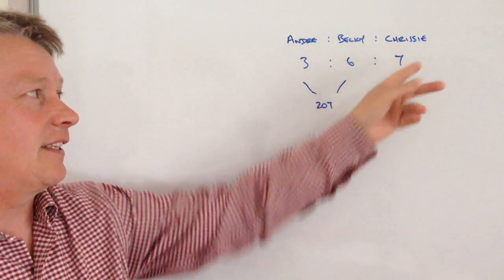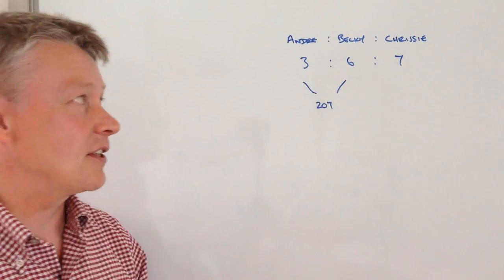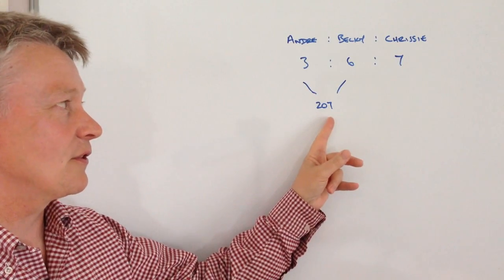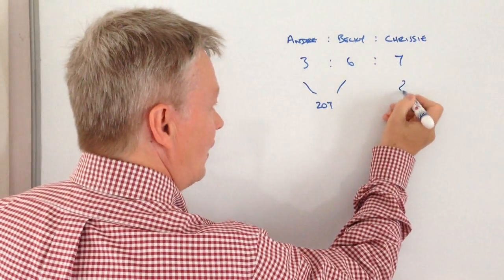But basically we've got Andre, Becky, and Chrissy who are sharing some money in the ratio 3 to 6 to 7, and Andre and Becky's combined share is £207. The question is, how much does Chrissy get?